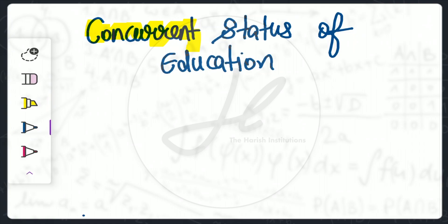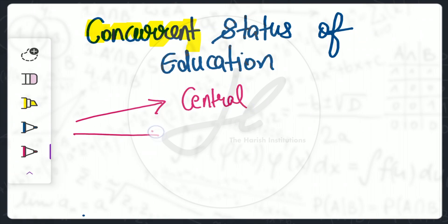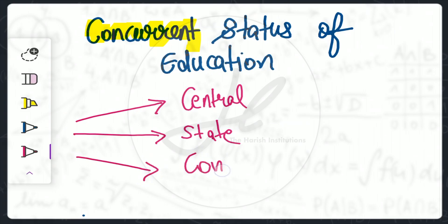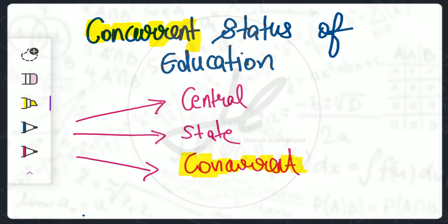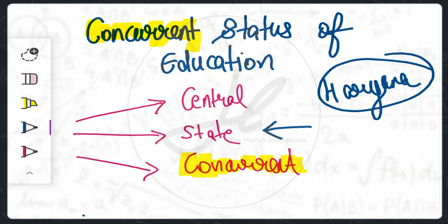Education basically functions on three levels: one at the central level, another at the state level, and the third at the concurrent level. We will discuss the main thing about the concurrent first, but we will also understand what is the state and the central meaning.